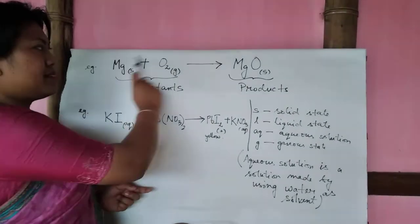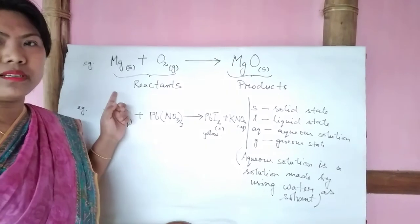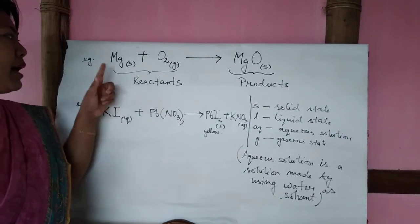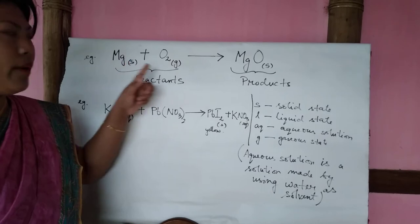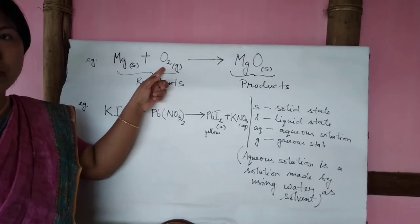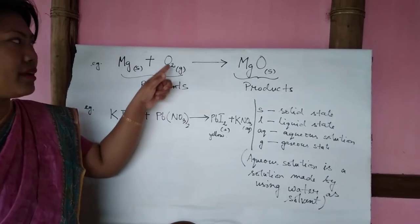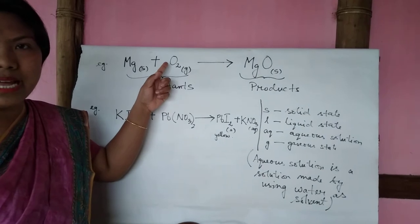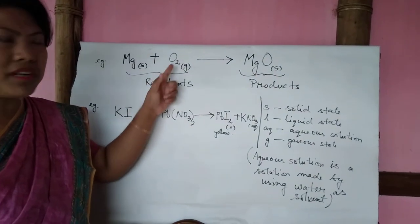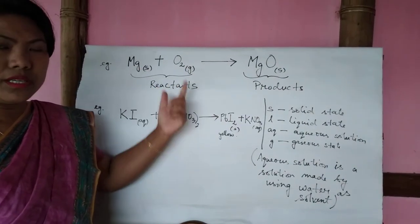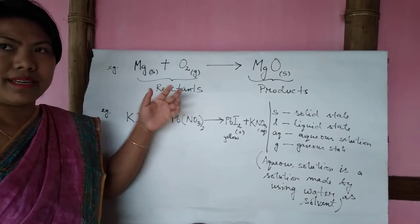Now, here, this is an example of a chemical equation. Now, I have used the symbol of magnesium, and now I have used the symbol of oxygen. Here I have used oxygen as O2, not O, because when we use oxygen, oxygen does not exist in the elemental state.